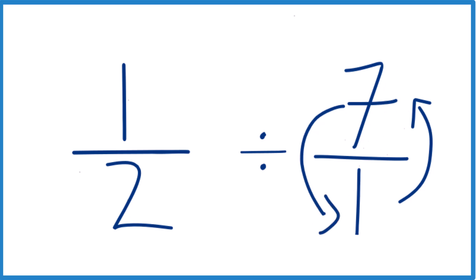That way, 1 half, not divided now, but multiplied by the reciprocal. So 1 over 7. So 1 half times 1 over 7.